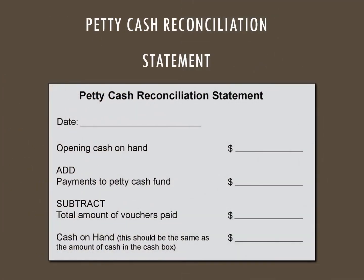Here's an example of a petty cash reconciliation statement or voucher. You can see we've got a date, open cash on hand, any payments made to the petty cash fund, and then we subtract any vouchers that were paid out of it.